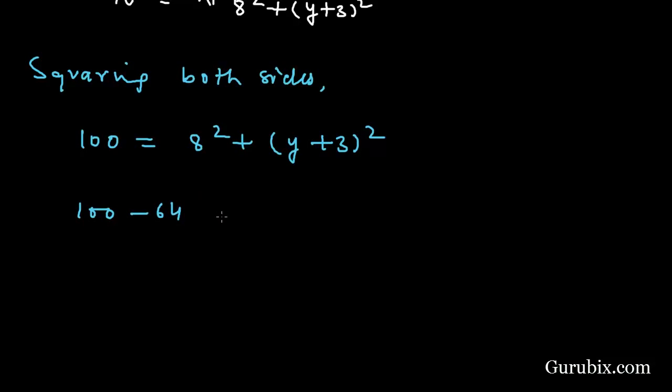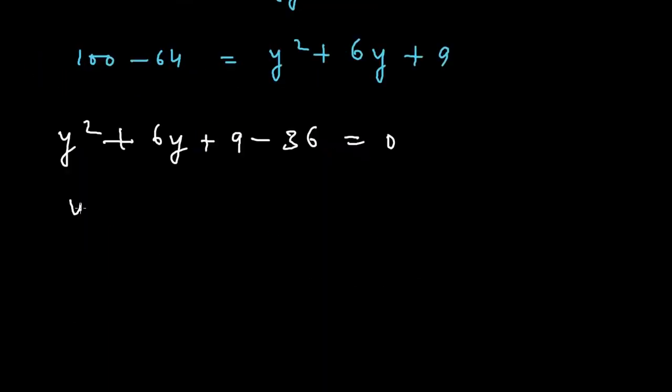And here we have Y squared plus 6Y plus 9 when we expanded this (Y + 3) whole squared. Finally this is equals to Y squared plus 6Y minus 36 equals 0. Then it becomes Y squared plus 6Y minus 27 equals 0.